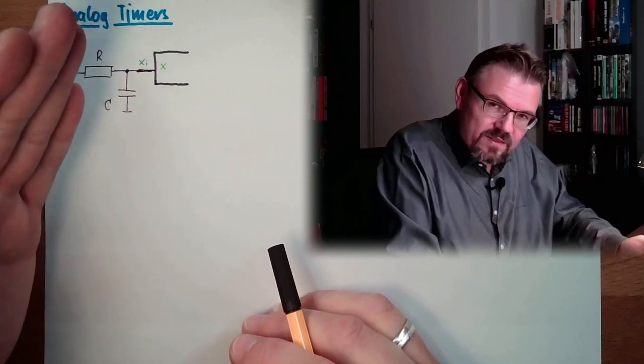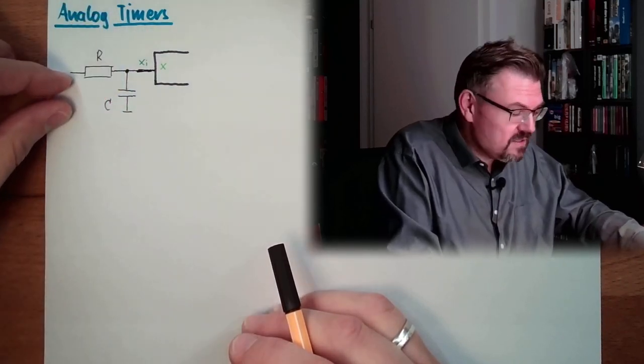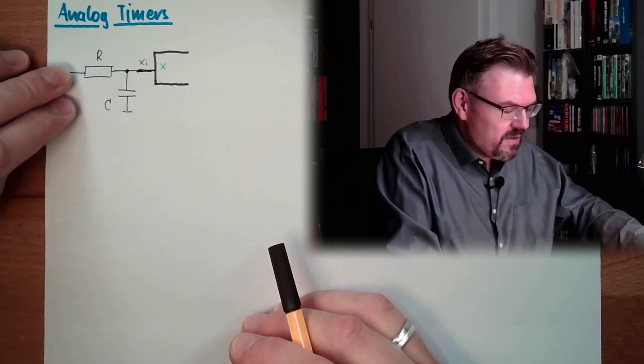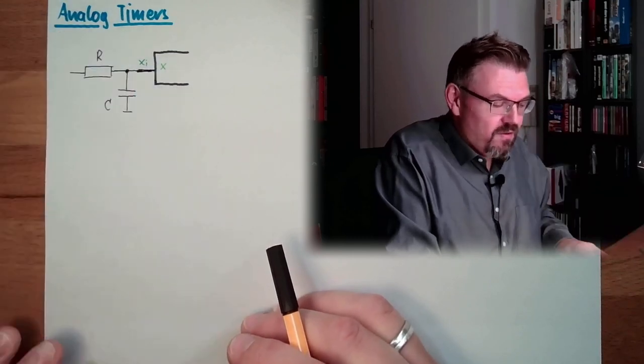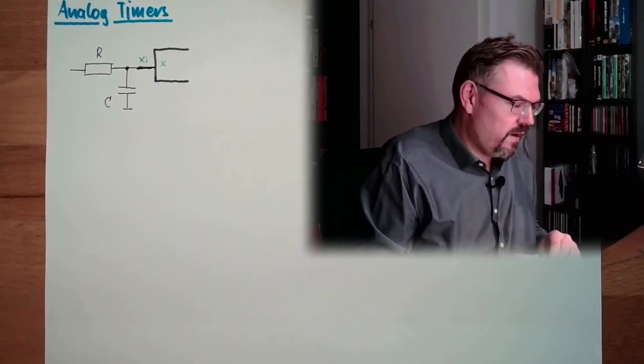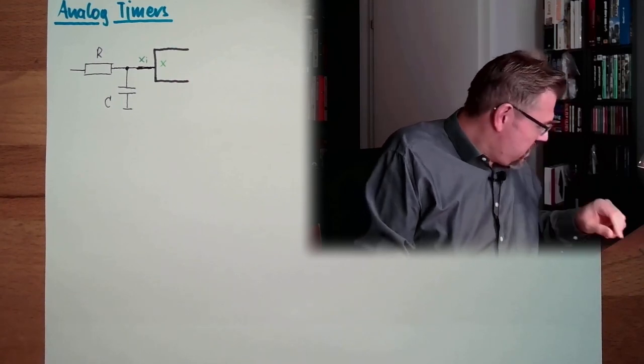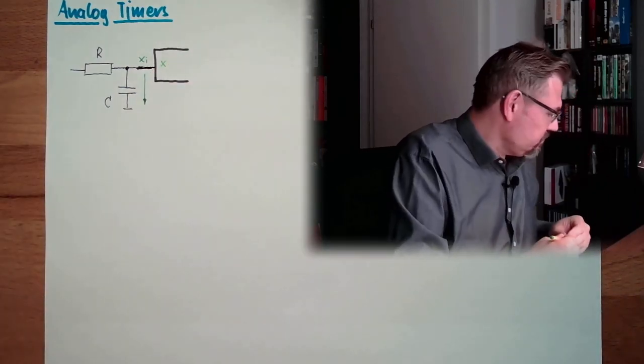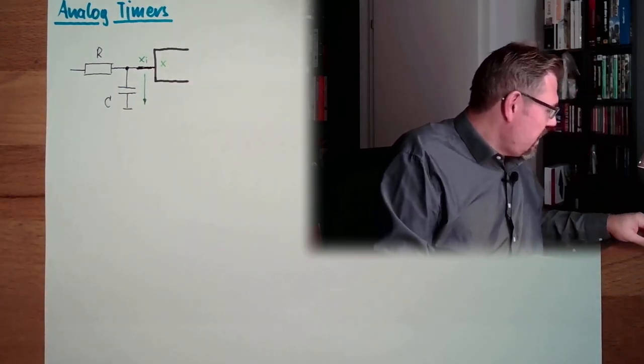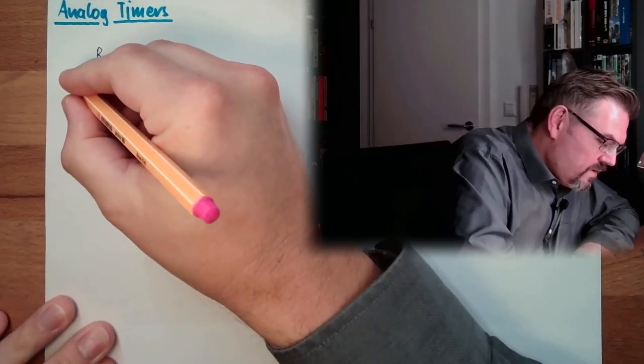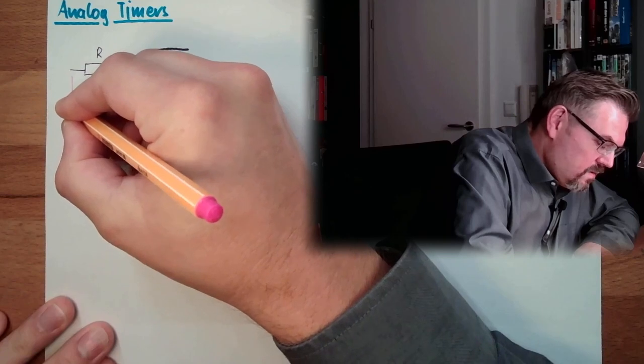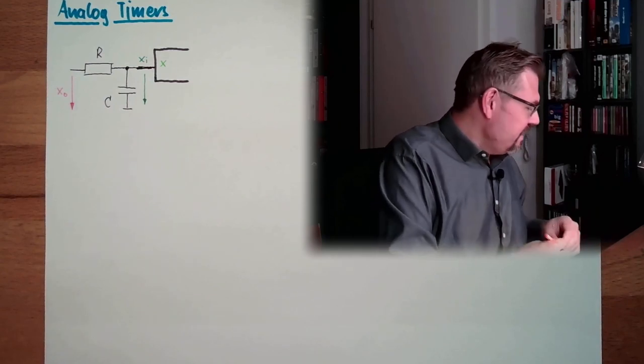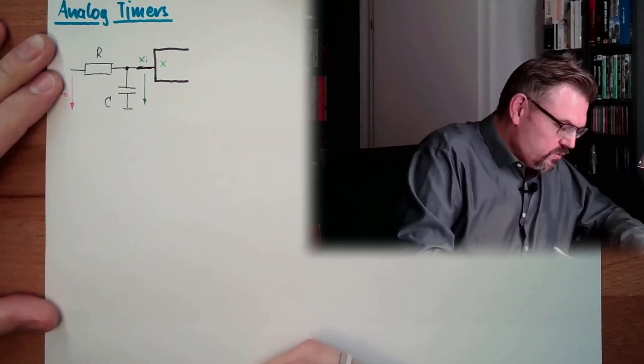And then at some point in time, later, after I switched on this voltage here, at some point in time, this will reach the trigger level. So here we have this XI. And up front here, we have XO, what we on the outside put in. And now, let's see how this would look like.